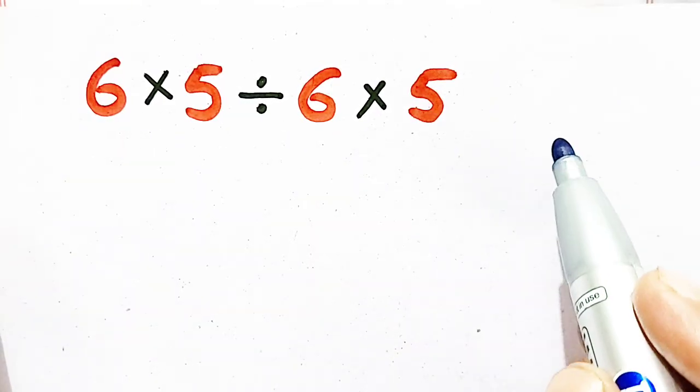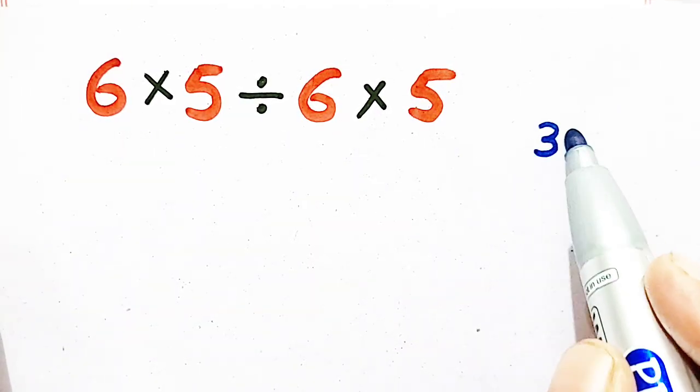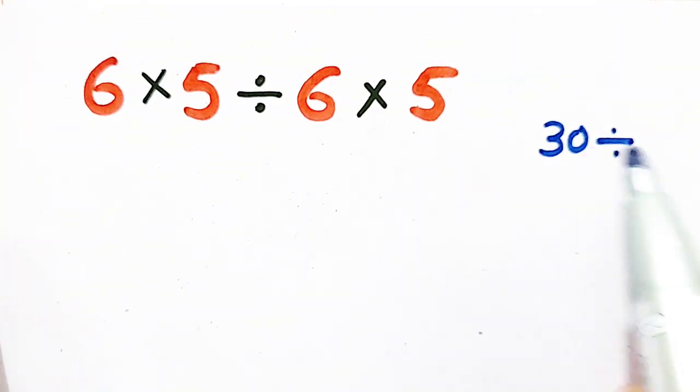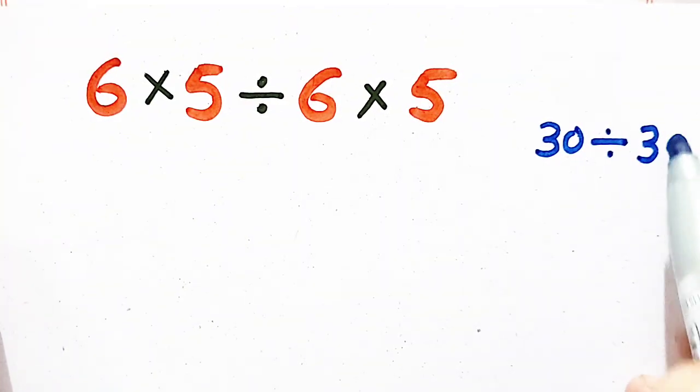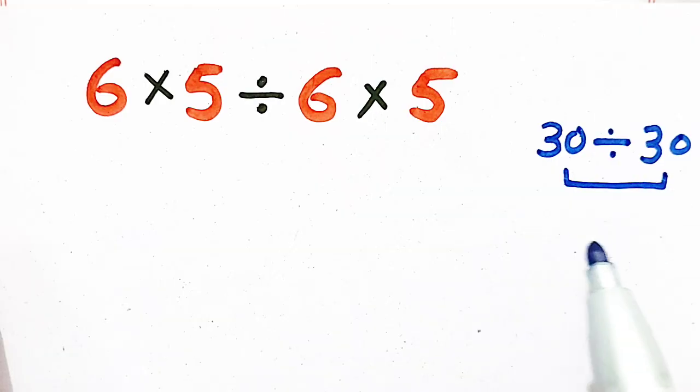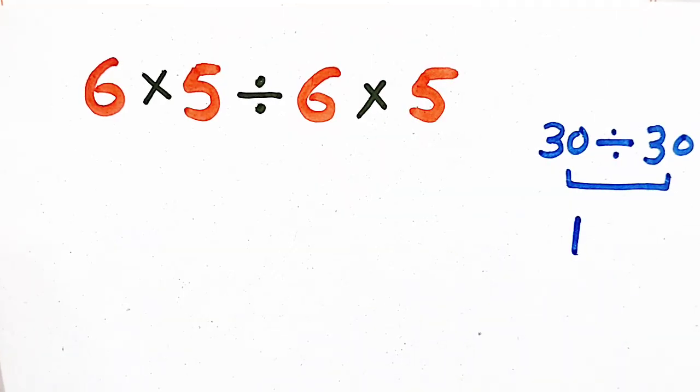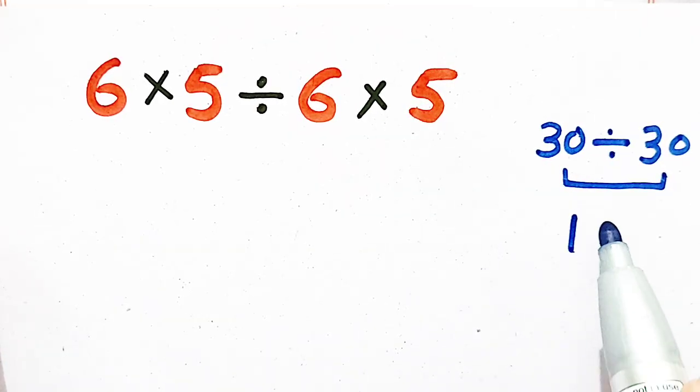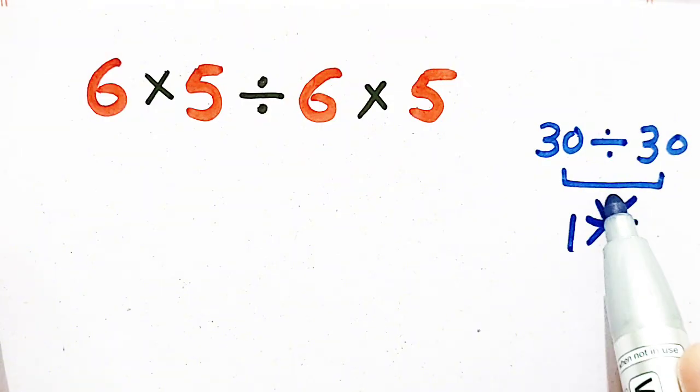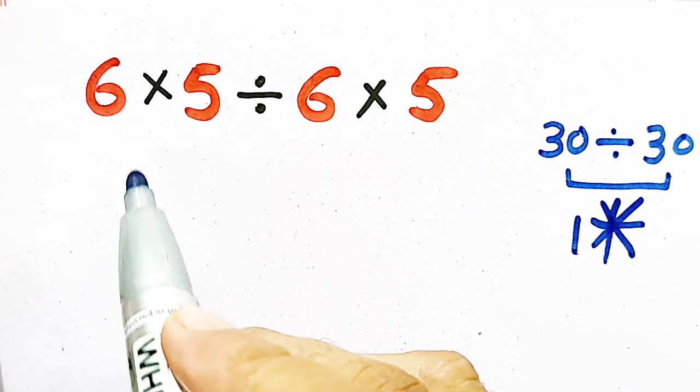6×5 is equal to 30, divided by 6×5 is equal to 30. 30 by 30 is equal to 1, which is our answer, but it is not correct.